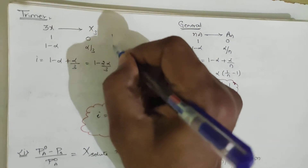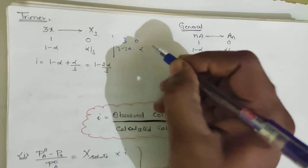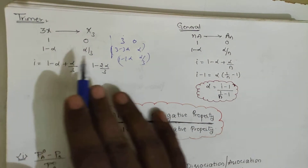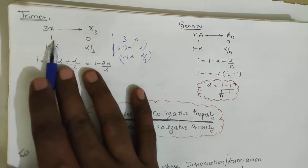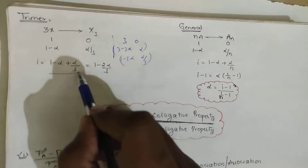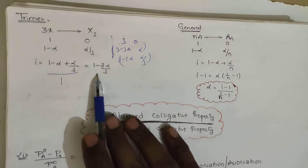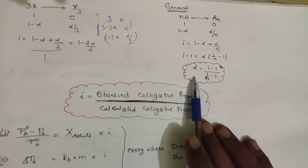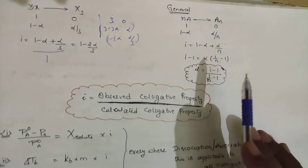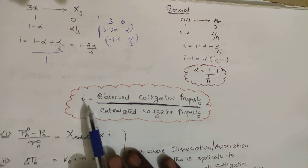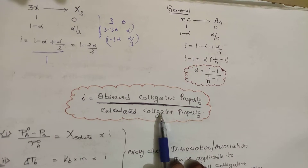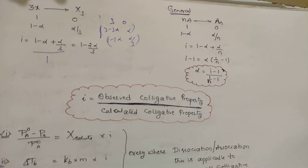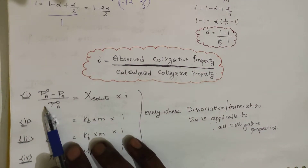For 3A → A₃ with partial association: i = 1 - 2α/3. In general for nA → Aₙ: i = 1 - (n-1)α/n. The degree of dissociation for association: α = (1 - i)/(1 - 1/n). No need to memorize all these — just understand the derivation process.